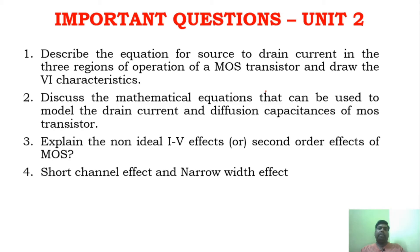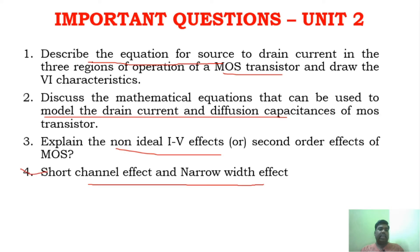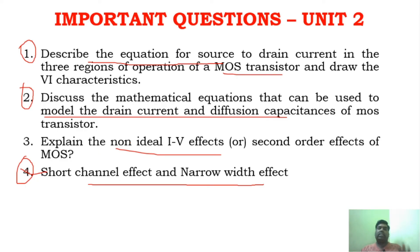For unit 2, you have derivations. The first important question involves equations for source-to-drain current in the 3 regions of MOS transistors, and similarly mathematical equations used to model the drain current and diffusion capacitance — that is the first question. Similarly, non-ideal IV effects, short channel effect, and narrow width effect are also key questions. Make it very sure you study all these three questions for unit 2.